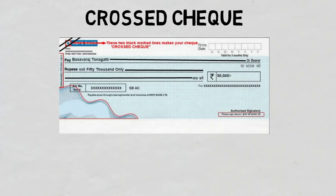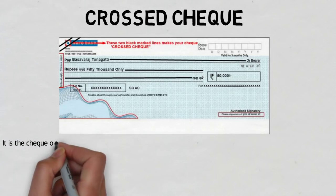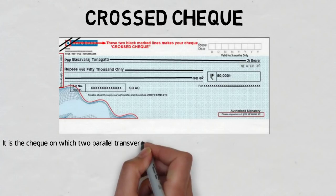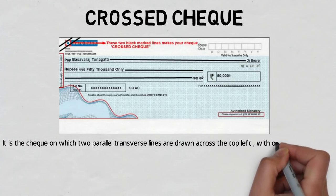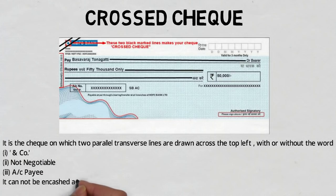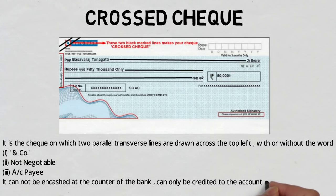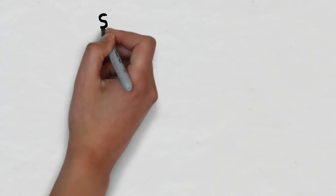The second type of check is the crossed check. It is a check in which two parallel lines are drawn across the top left corner, with or without words like 'and company,' 'not negotiable,' or 'account payee.' It cannot be encashed at the counter of the bank and can only be credited to the account of the payee.